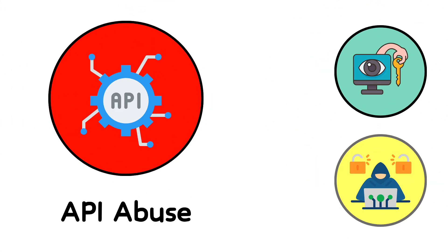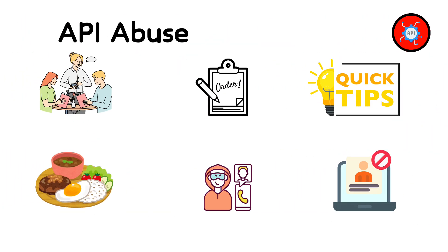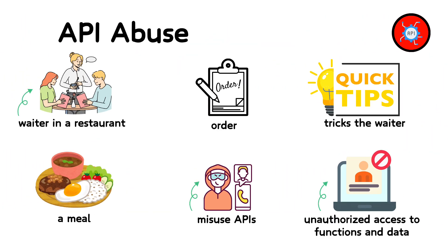16. API Abuse. Think of an API like a waiter in a restaurant who takes your order to the kitchen. API abuse happens when someone tricks the waiter into bringing them a meal they didn't pay for. Hackers misuse APIs to get unauthorized access to functions and data they shouldn't have.